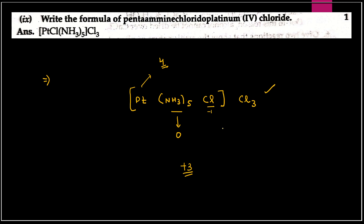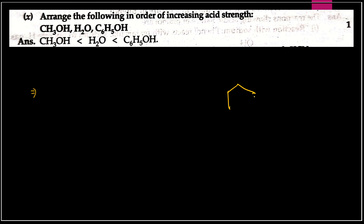Question number ten: arrange in increasing order of acid strength. Acid character sabse zyada kiskas hoga? Benzylic acid mein carbon aur OH hota hai — phenol mein directly ring se OH. Phenol ka acid character zyada hota hai water se, aur water ka acid character zyada hota hai kisi bhi aliphatic alcohol se — for example methanol se. So increasing order: aliphatic alcohol < water < phenol.